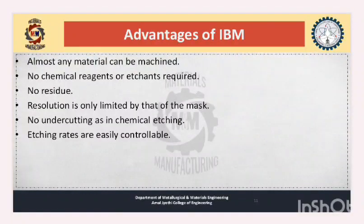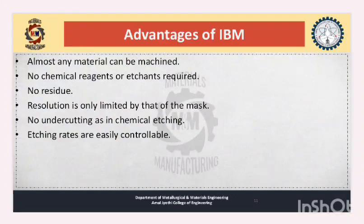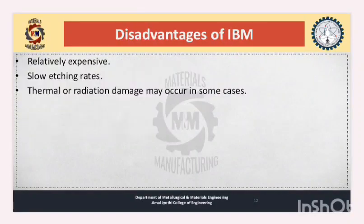Advantages of IBM: almost any material can be machined — that is one of the main advantages. There is no chemical reagent required and there is no residue. Resolution is only limited by that of the mask. There is no undercutting as in chemical etching, and etching rates are easily controllable.